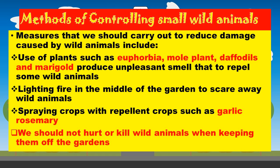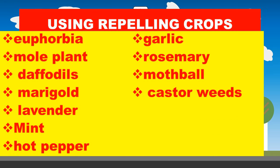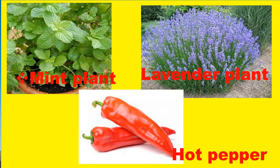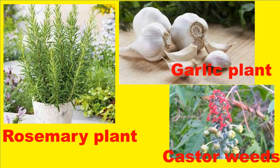We should not hurt or kill the wild animals when keeping them off the garden. Learners, these are some of the repellent plants that we should use: euphorbias, marigold, lavender, mint, hot pepper, garlic, rosemary, mothball, and castor plant.